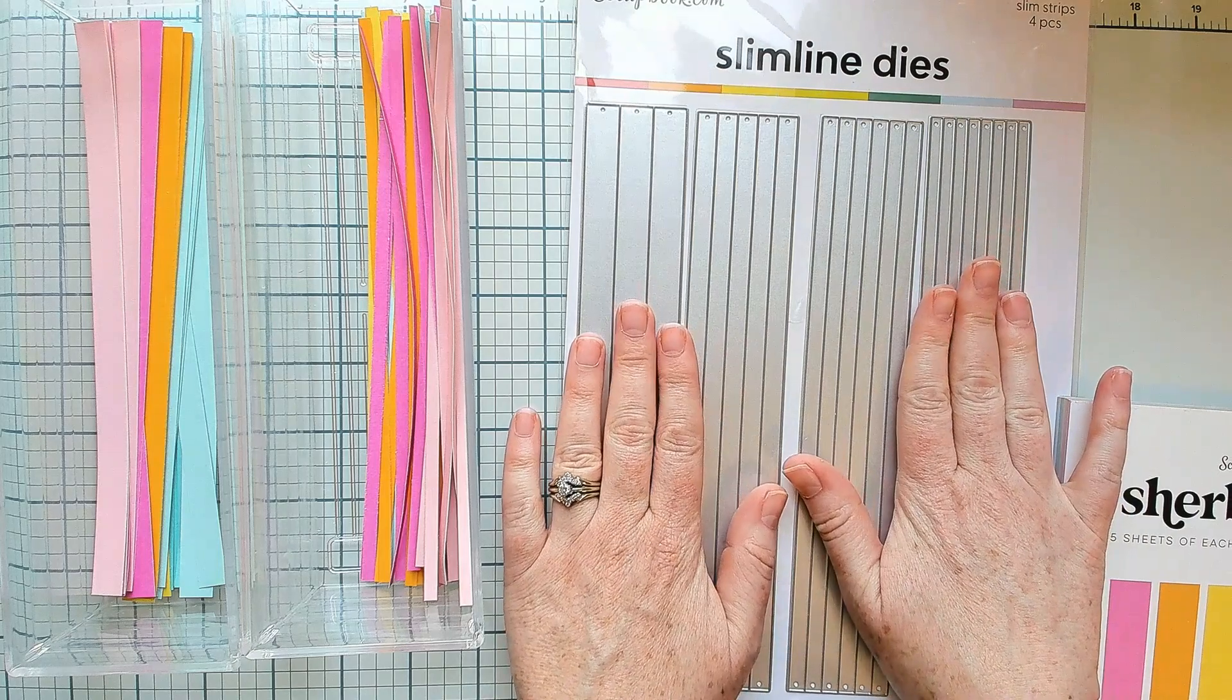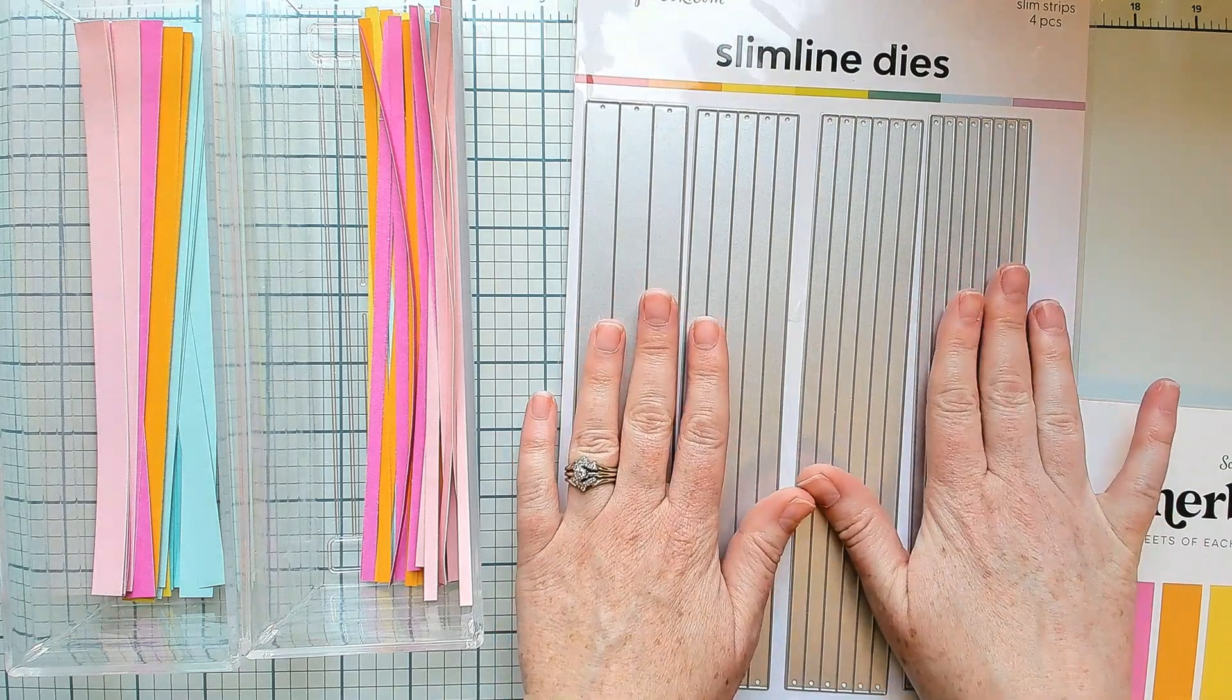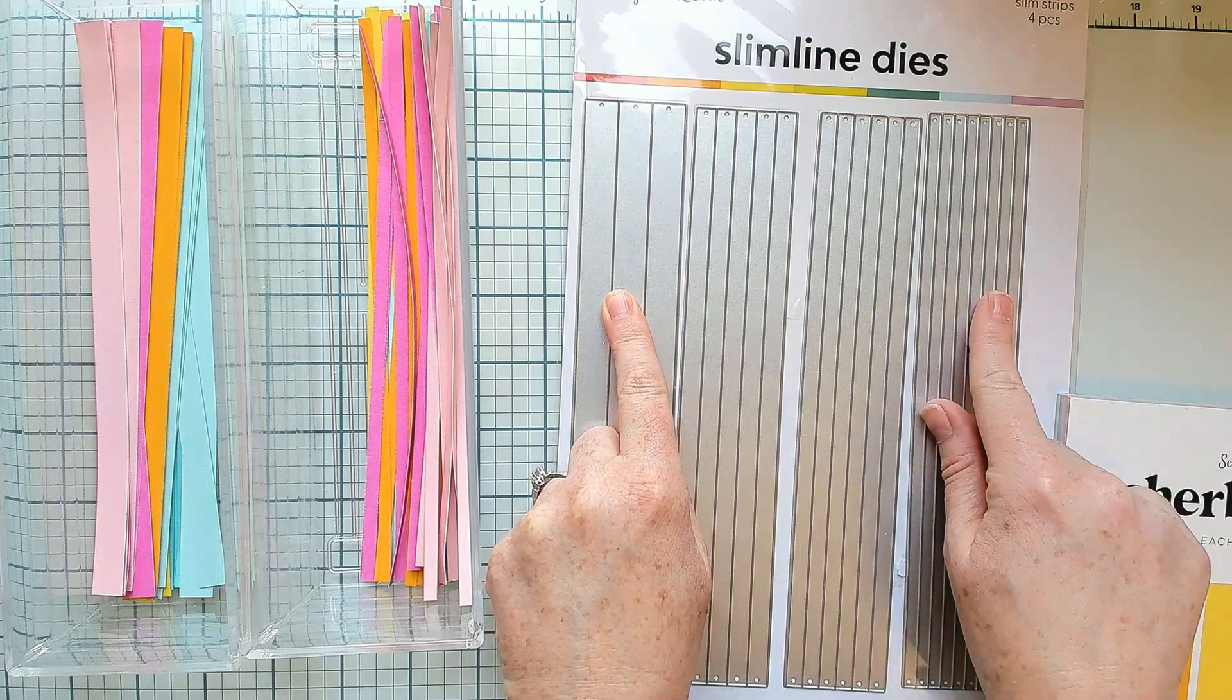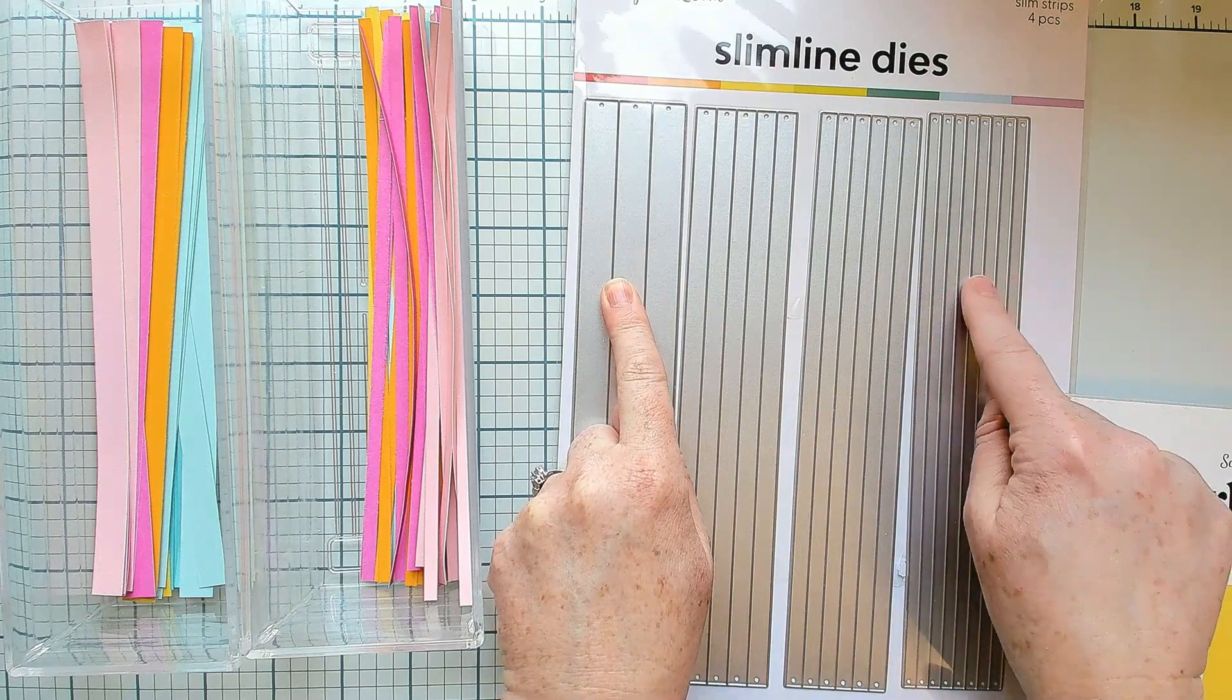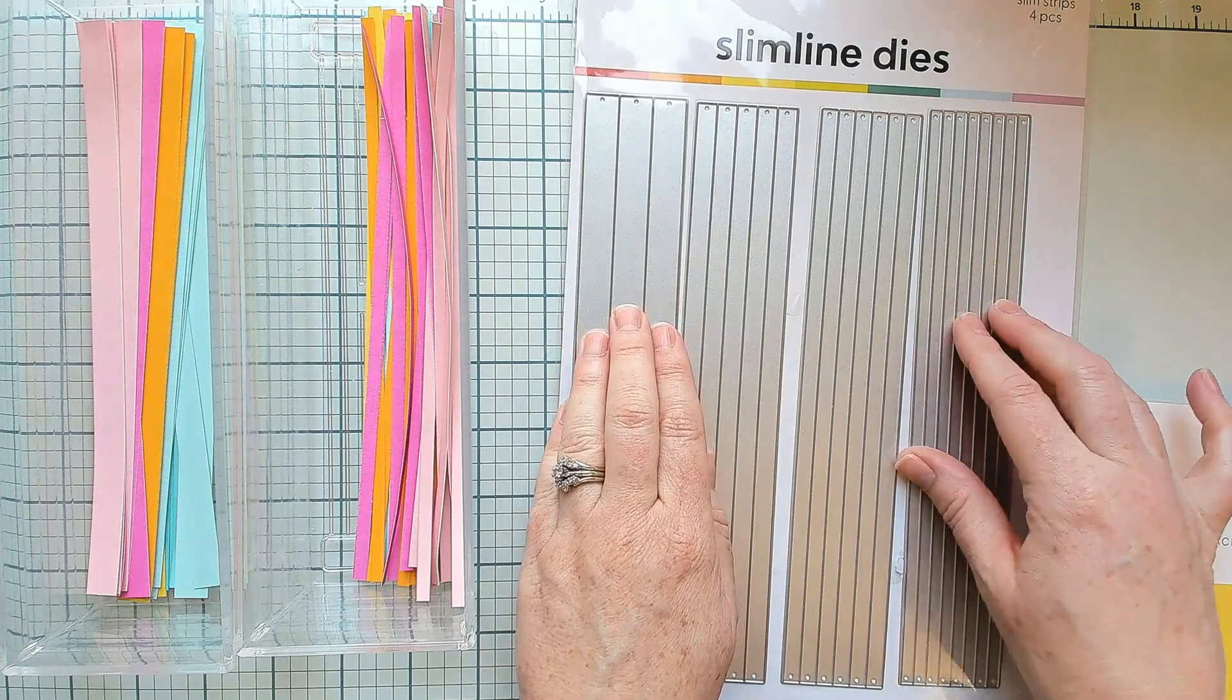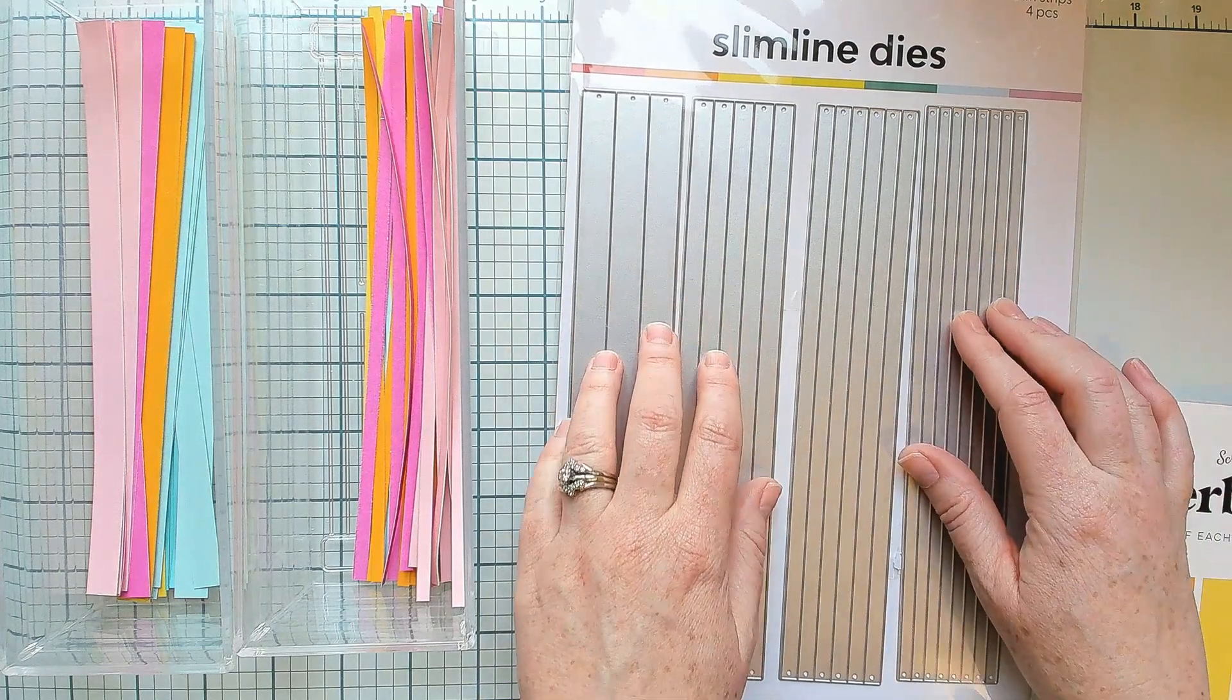You can use the slimline dies from Scrapbook.com. I'm using the larger die and the smaller—these are a half inch and an eighth inch. Or you can also just trim them down with a paper trimmer.